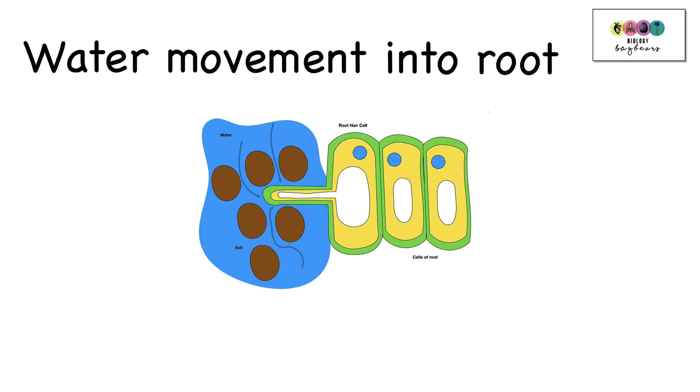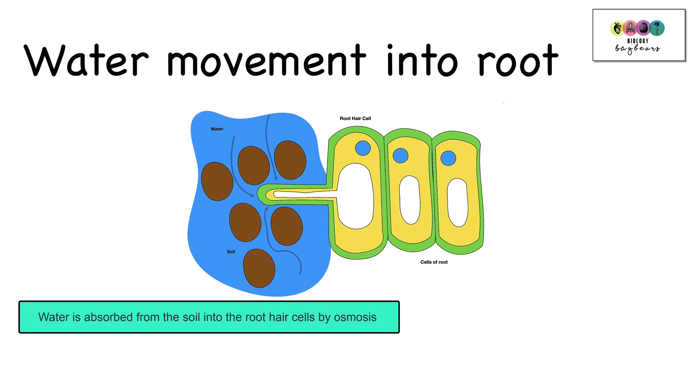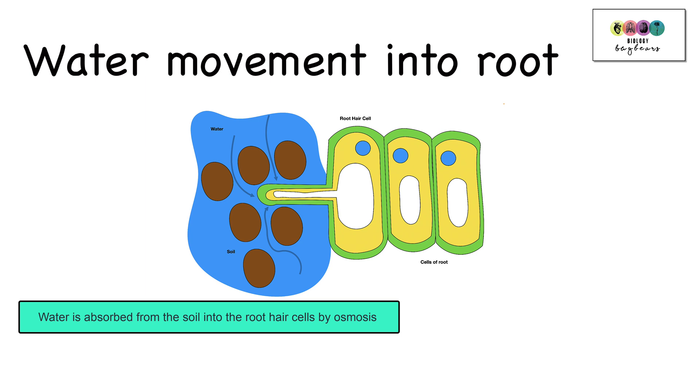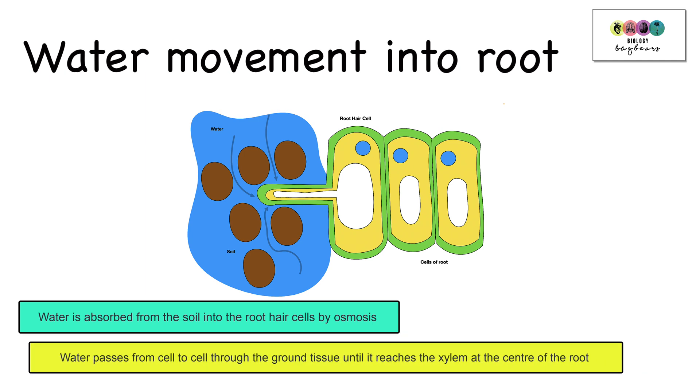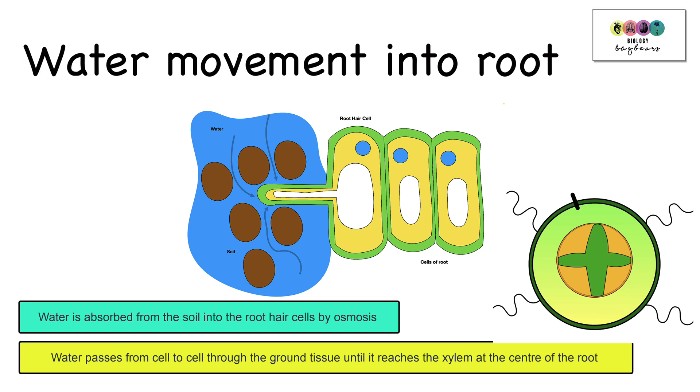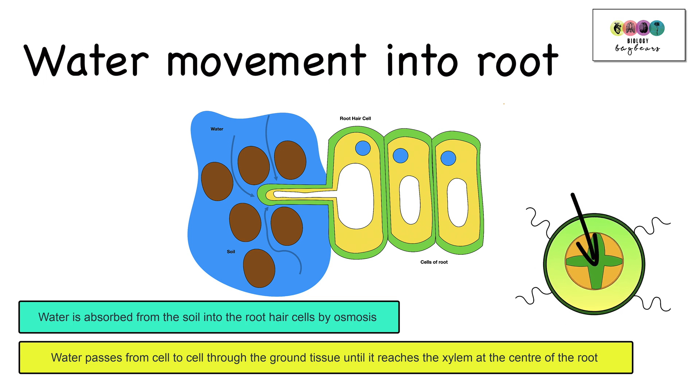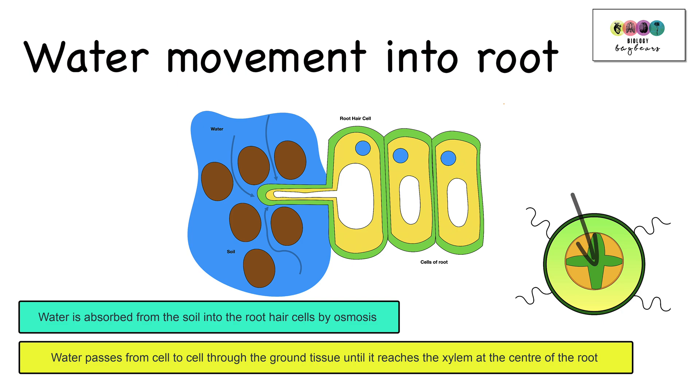Give an account of how water moves into the root of a plant. Well, firstly, water is absorbed or enters the root by osmosis through those root hair cells and it passes from cell to cell across the ground tissue of the root until it reaches the xylem, the vascular tissue at the center of the root and from there, it's transported upwards through the plant in the xylem.